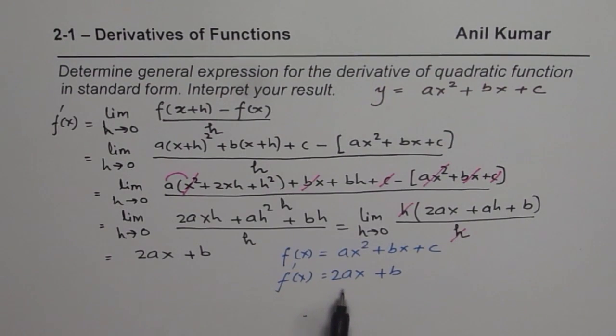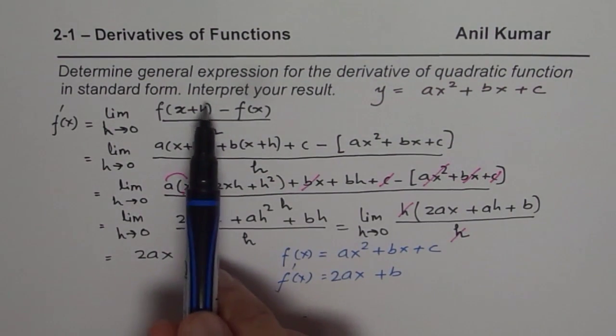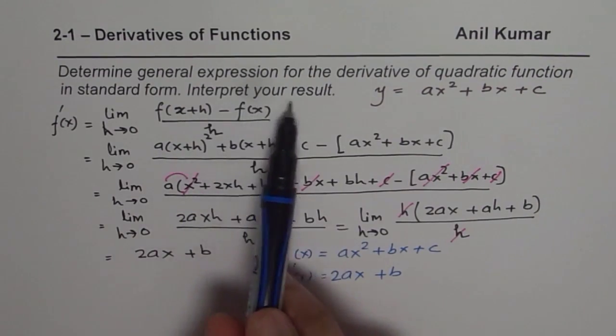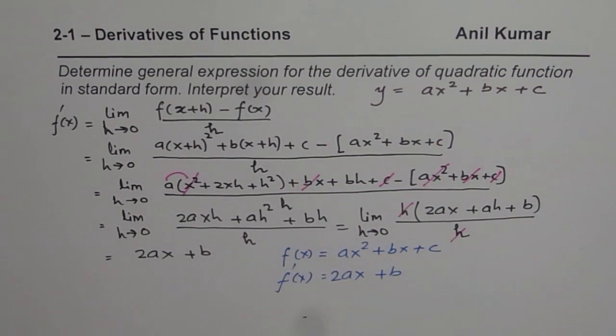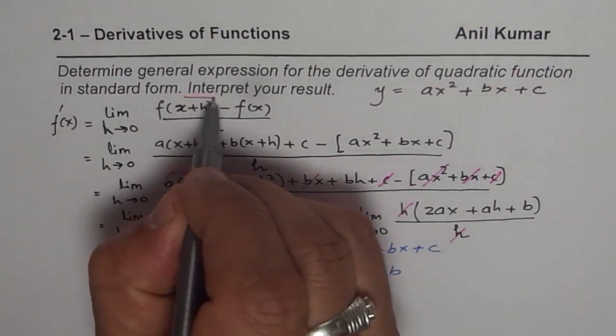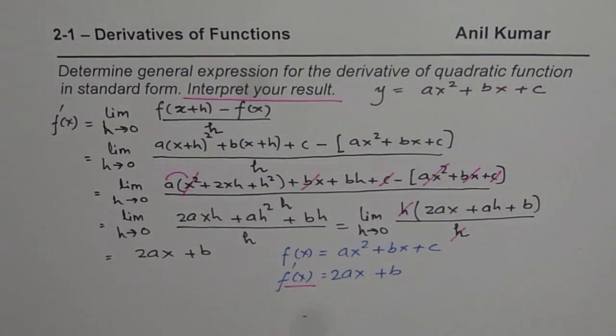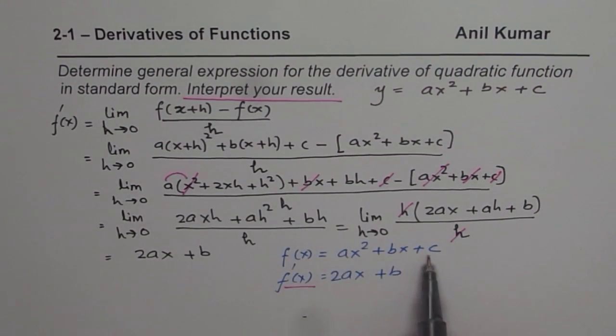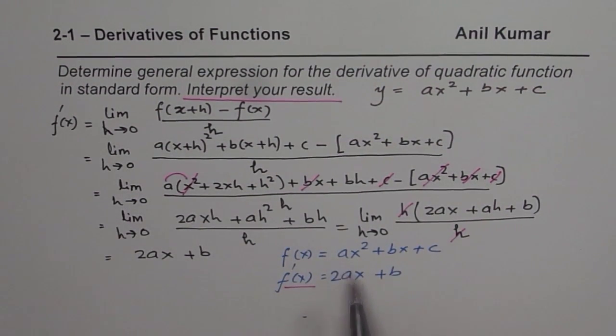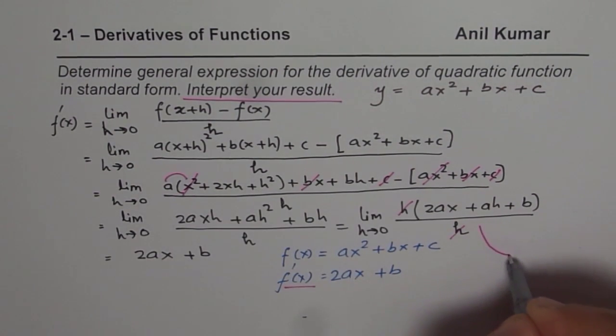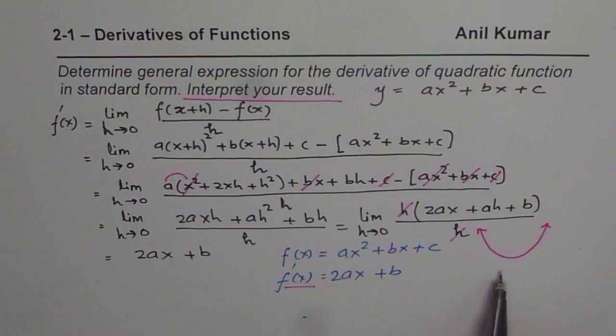So from here, what do you interpret? The second part of this question is interpret your result. That's kind of important. Result means we have to interpret what derivative signifies here. So for a parabola, this is kind of a parabola. Let's assume a is positive. So it will be a function which is kind of like this.